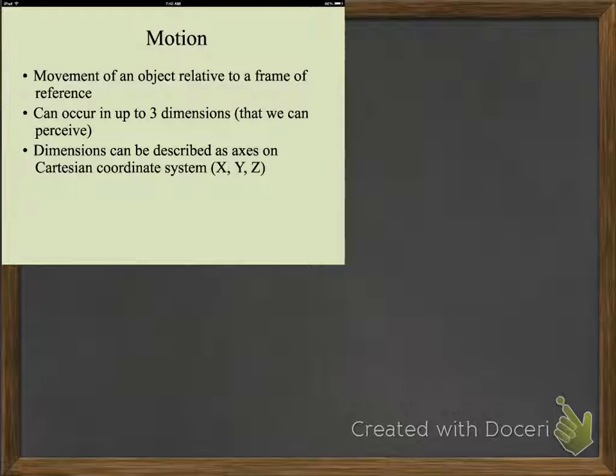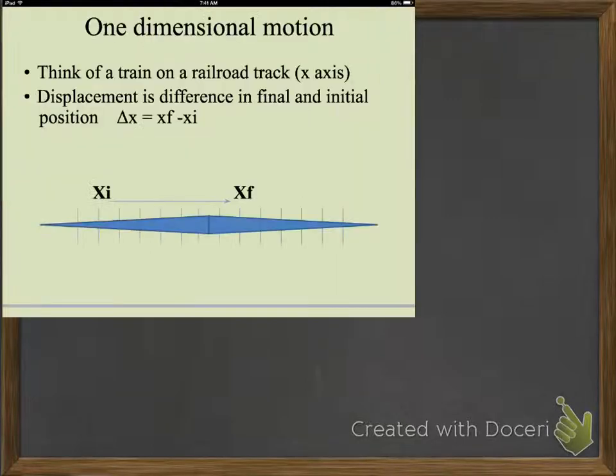We're going to deal with motion in this chapter on only one dimension. We'll start to throw in a second dimension in the next chapter. You can think of motion in one dimension as something that's tied to a track. Not a roller coaster, however. A train, a little trolley system.